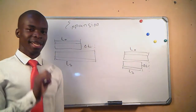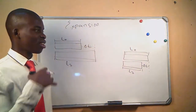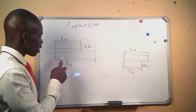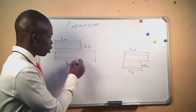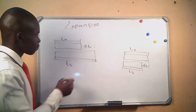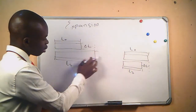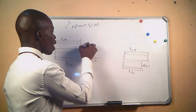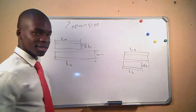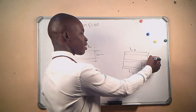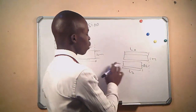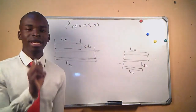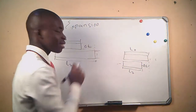So we call this linear expansion. Why do we call it linear expansion? It is because we are only dealing with the expansion of one side — only this side right here. We assume the other sides remain the same. If it was one metre here, it will also be one metre there. So we say it's linear expansion because we are only focusing on the expansion of one side.